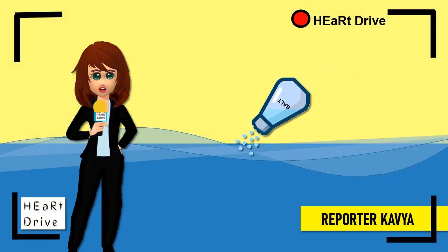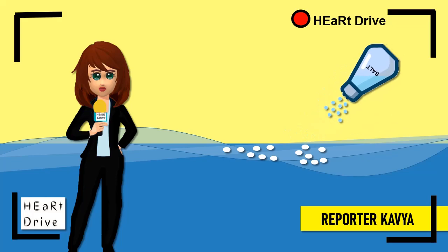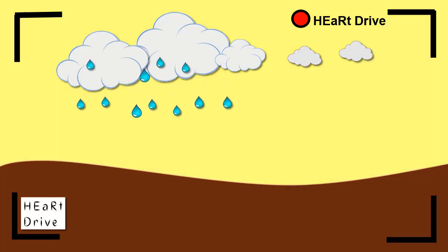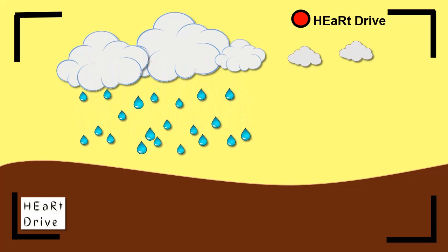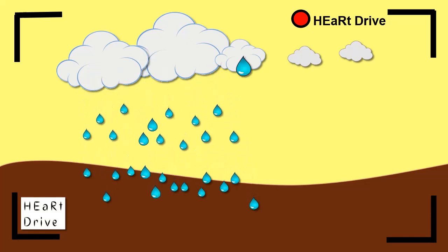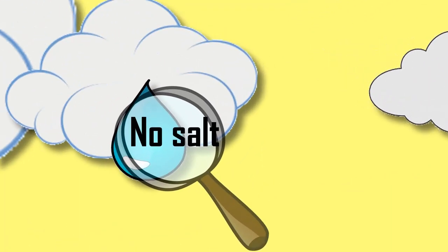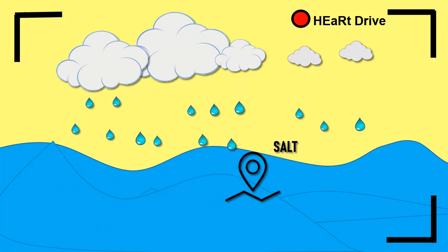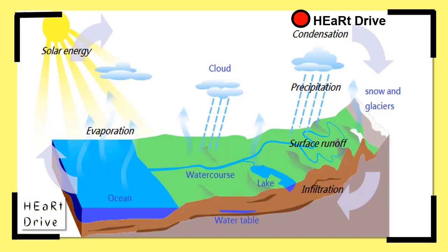Hi, I am Kavya from Hard Drive. The main source of water to earth is rain. When it rains, the rainwater reaches the earth as fresh water with no salt in it. Then, how does the water in ocean and sea become salty? Let's learn it from the journey of water.